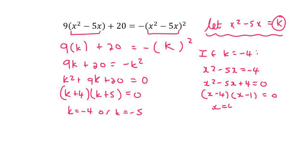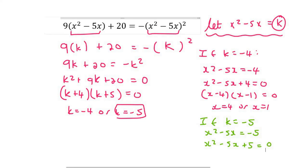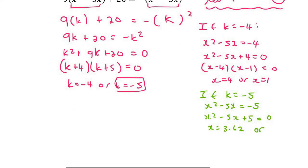So x equals 4 or x equals 1. Now we need to use the other value. If k equals negative 5, then x² minus 5x equals negative 5, so x² minus 5x plus 5 equals 0. This one doesn't factorize nicely, so I would use the quadratic formula here. This gives us x equals 3.62 or x equals 1.38. And so there are our answers.